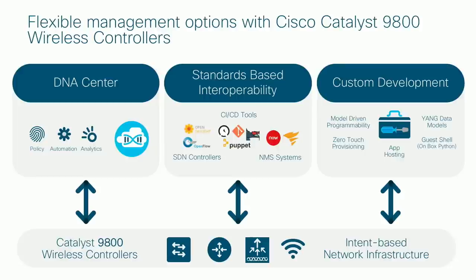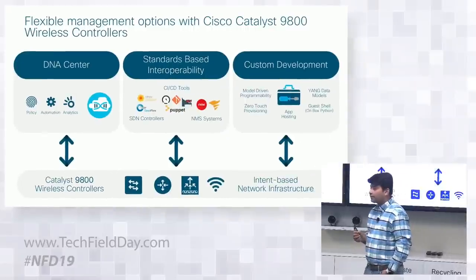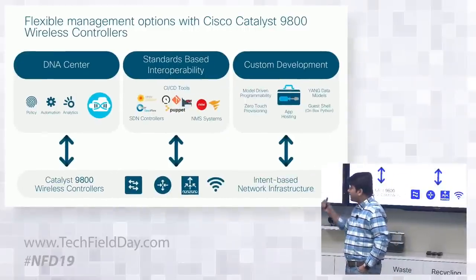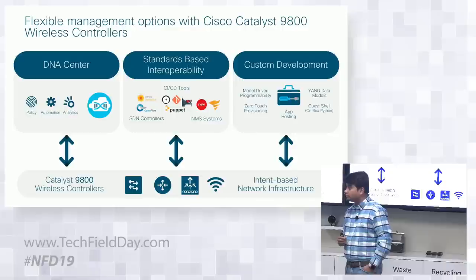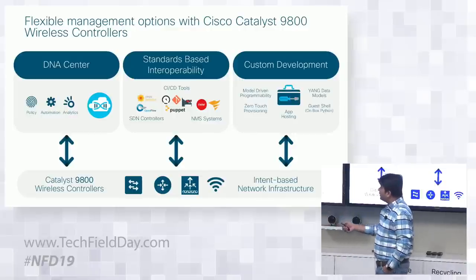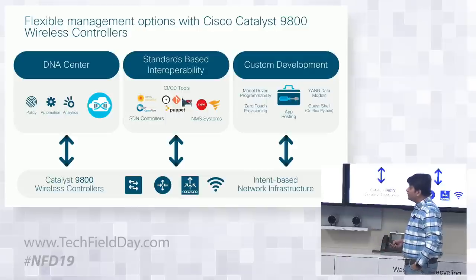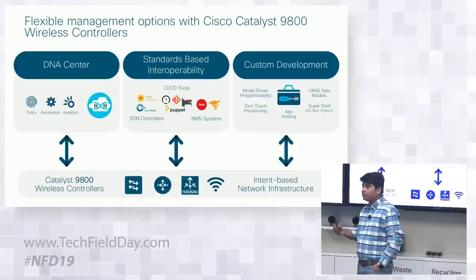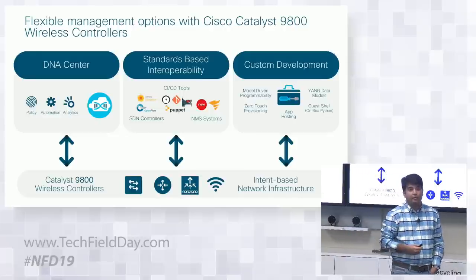The 9800 provides the most flexible management options. The Catalyst 9800 controller can be managed from DNA Center, Cisco Prime, and an integrated simple Web UI. The CLI is present as an IOS XE CLI, but because it is powered by IOS XE's open and programmable architecture, it can also be managed via NetConf and Yang models. DNA Center manages it with NetConf and Yang, and you can also use standard interoperability tools like Puppet or Ansible.